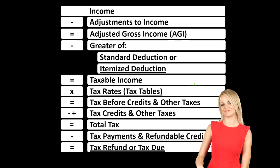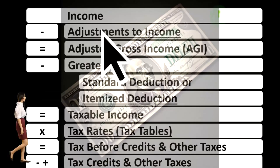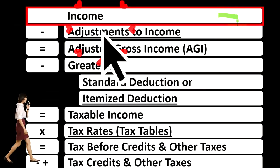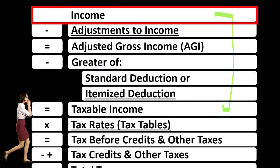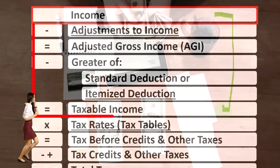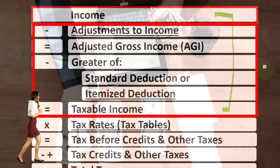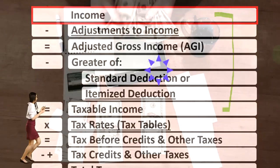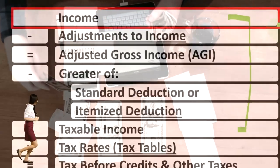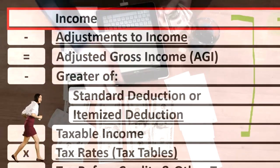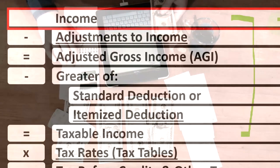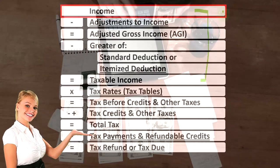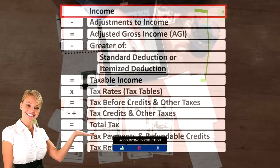Looking at the income tax formula, we're focused on line one, that being income. The first half of the income tax formula is essentially an income statement — just the scaffolding, just the outline — meaning other forms and schedules will be feeding into it. For example, the Schedule C, our point of major focus here, will feed into line one. The Schedule C is basically an income statement in and of itself: income minus expenses, basically business deductions, with the net income flowing to line one of the income tax formula.